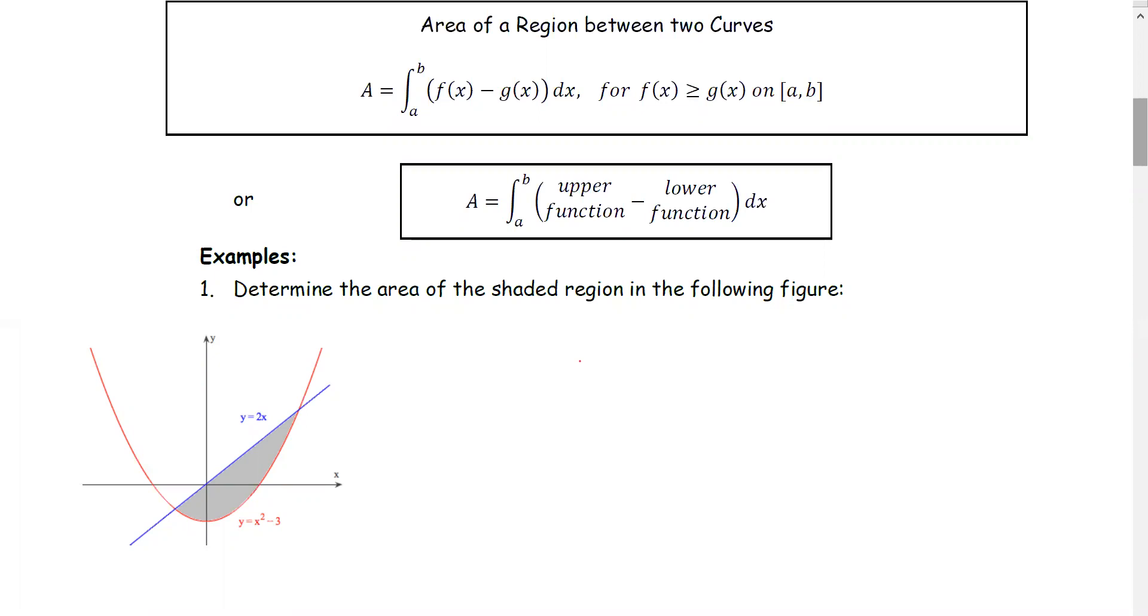Example 1: Determine the area of the shaded region in the following figure. We see the graph of y equals 2x and the curve y equals x squared minus 3, and the region bounded by these two graphs.